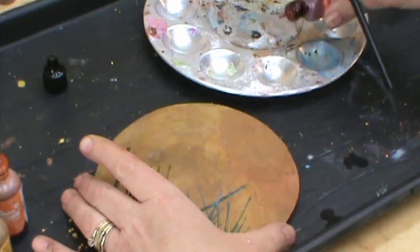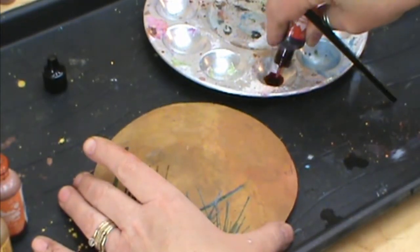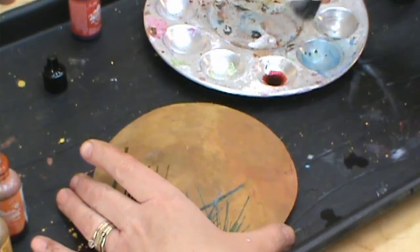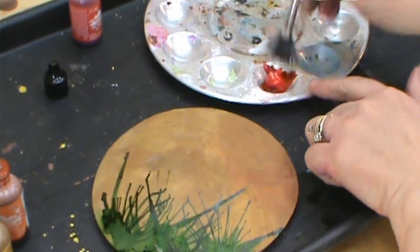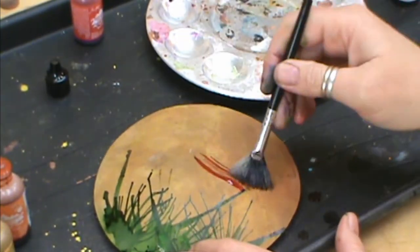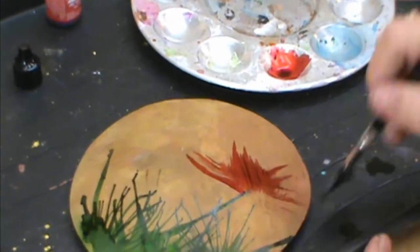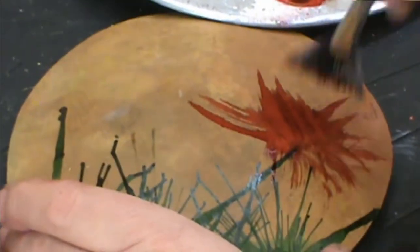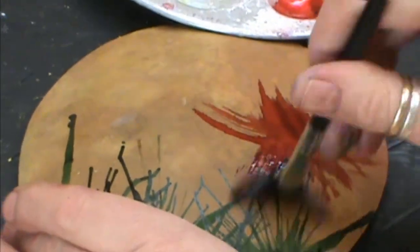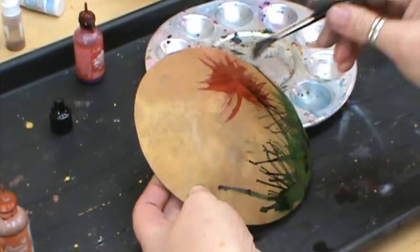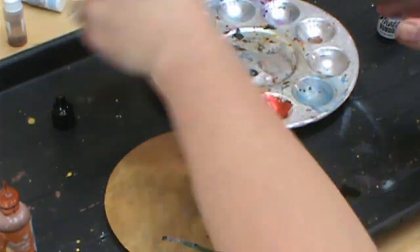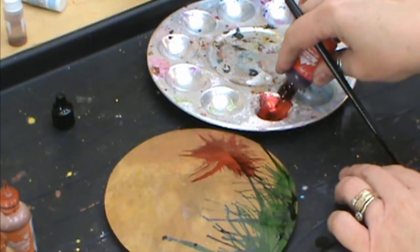I'm going to pour some of my alcohol ink into my metal mixture palette and we're going to use a rake brush. This rake brush is already stained from using it before. I'm just going to pull this out and make my flower, however you want to make your flower.